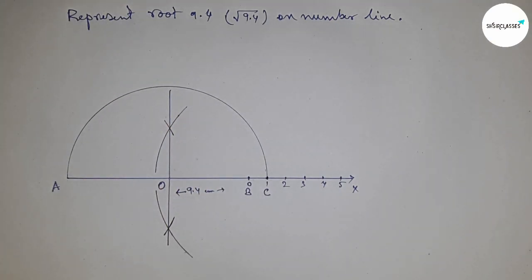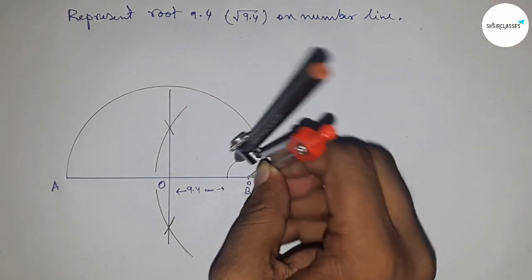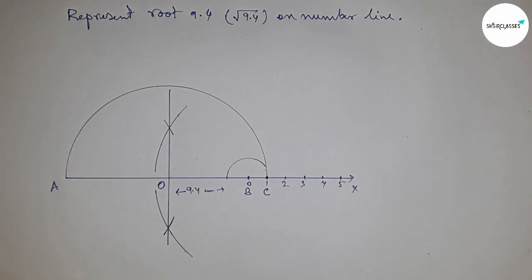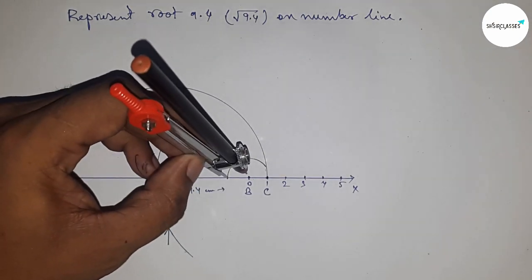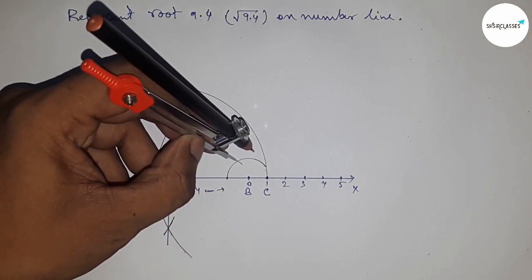Next, draw a 90-degree angle at point B. Construct a 90-degree angle at point B.